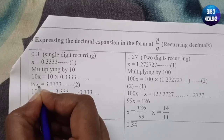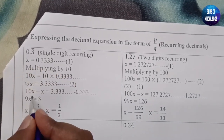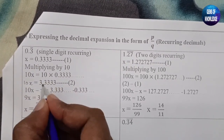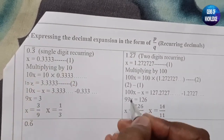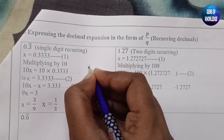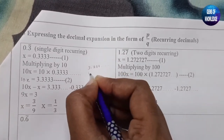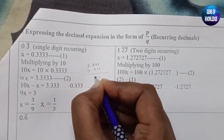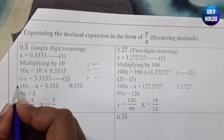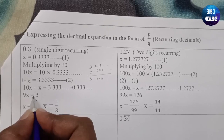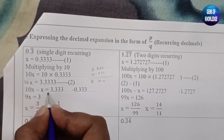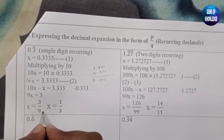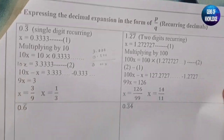Subtracting: 10x minus x equals 3.3333... minus 0.3333... The repeating parts cancel completely, leaving 9x = 3. So x = 3/9, which simplifies to 1/3. Therefore 0.3̄ = 1/3.